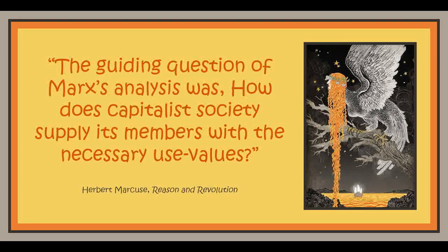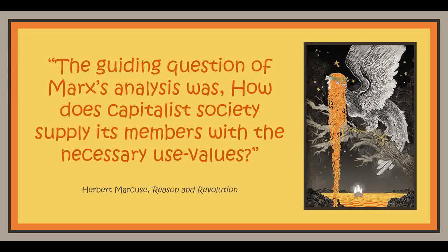There arose in the process the modern laborer, freed of all dependence on feudal lords and guild masters, but likewise cut off from the means and instruments through which he might utilize his labor power for his own ends. He was free to sell his labor power to those who held these means and instruments, to those who owned the soil, the materials of labor, and the proper means of production. Labor power and the means for its material realization became commodities possessed by different owners. This process took place in the 15th and 16th centuries and resulted with the universal expansion of commodity production in a new stratification of society.